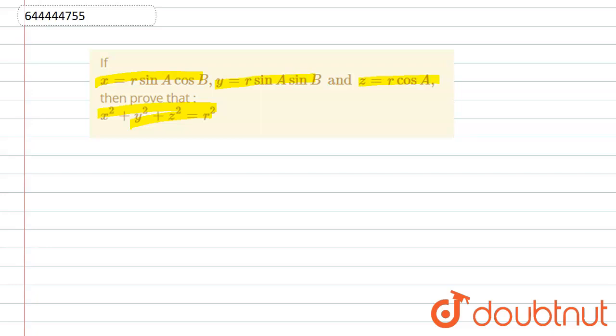So first of all, we will write the given part. x is equal to r sin A cos B. Similarly, y equals r sin A sin B, and z equals r cos A.